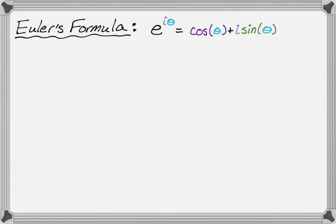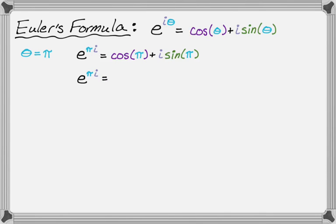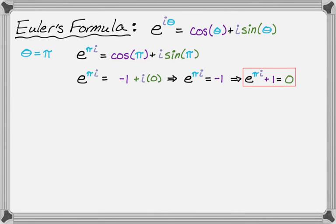One of the first things you usually do with Euler's formula, in case this is the first time you're seeing it, is plug in pi. If we let theta equal pi, we get e to the pi times i equals cosine of pi plus i times sine of pi. The cosine of pi is negative one, and the sine of pi is zero, so this simplifies to e to the pi times i equals negative one. Rearranging gives e to the pi times i plus one equals zero — an equation containing five of the most important numbers in math: e, pi, i, one, and zero. It's a very famous identity.